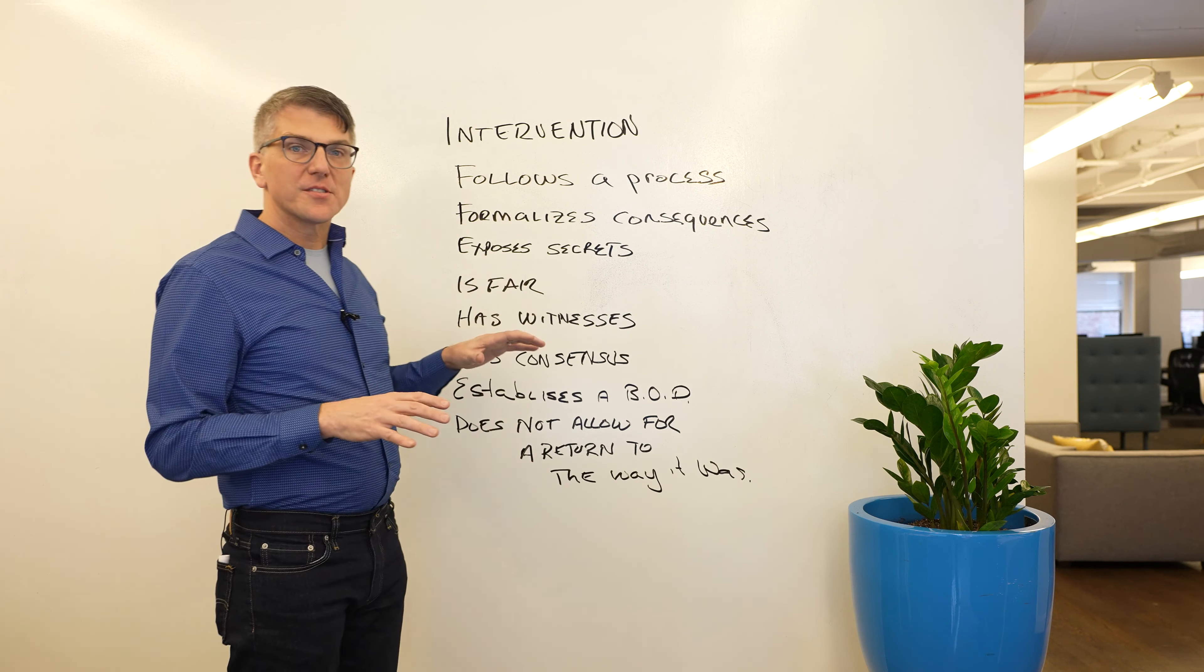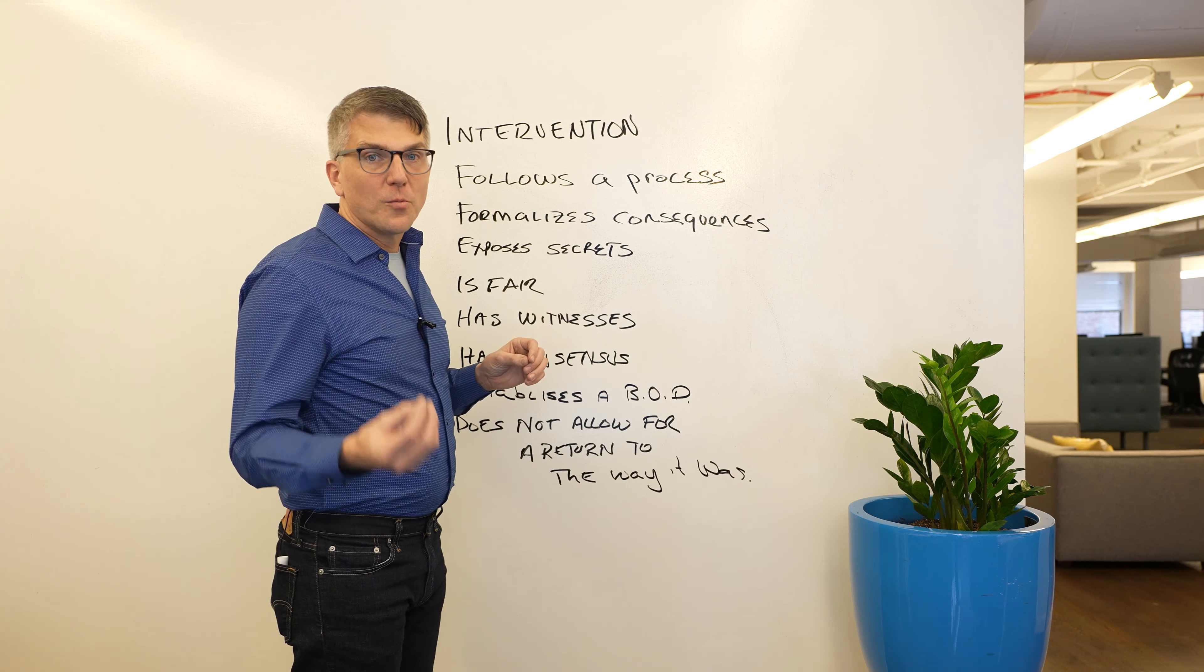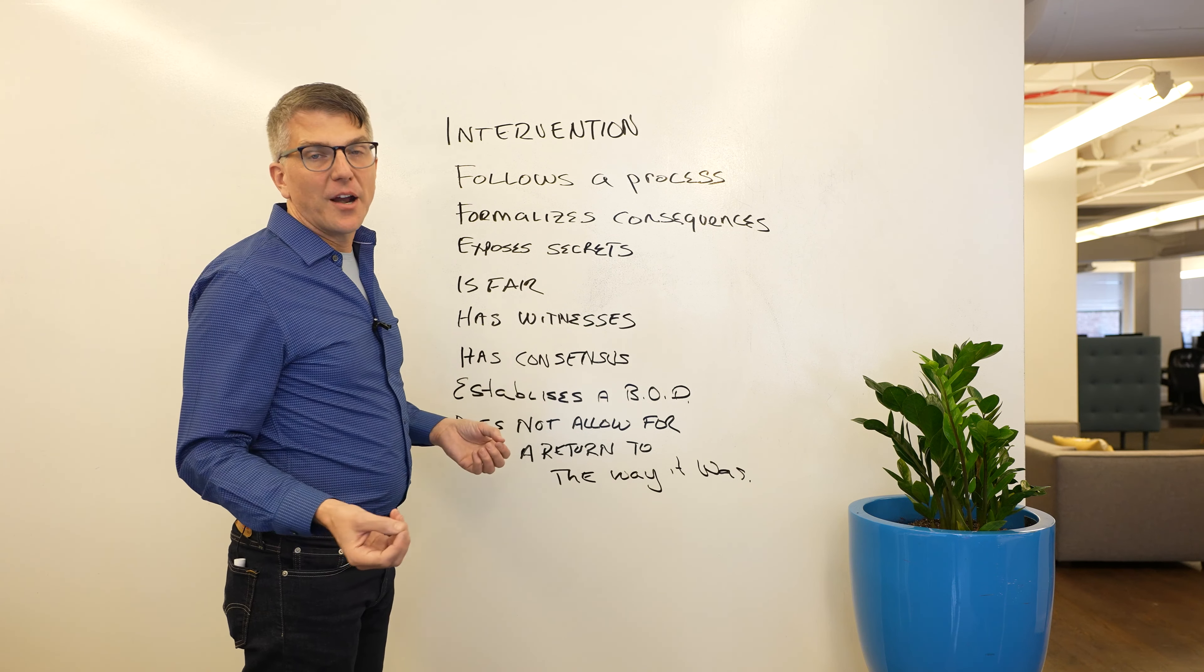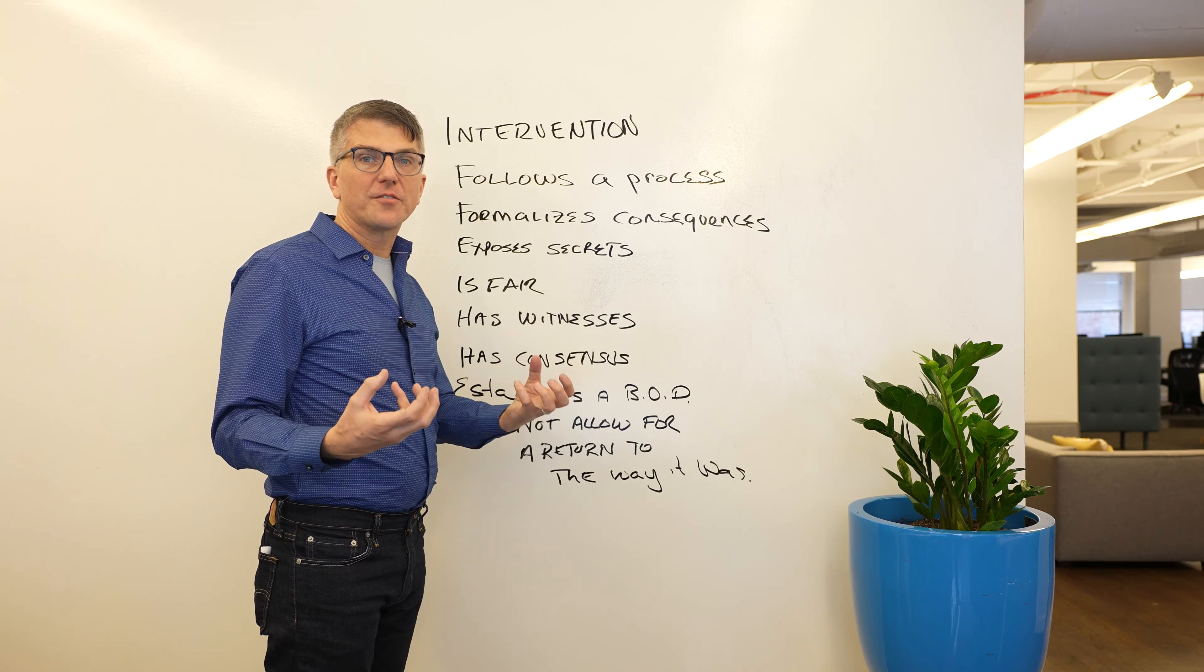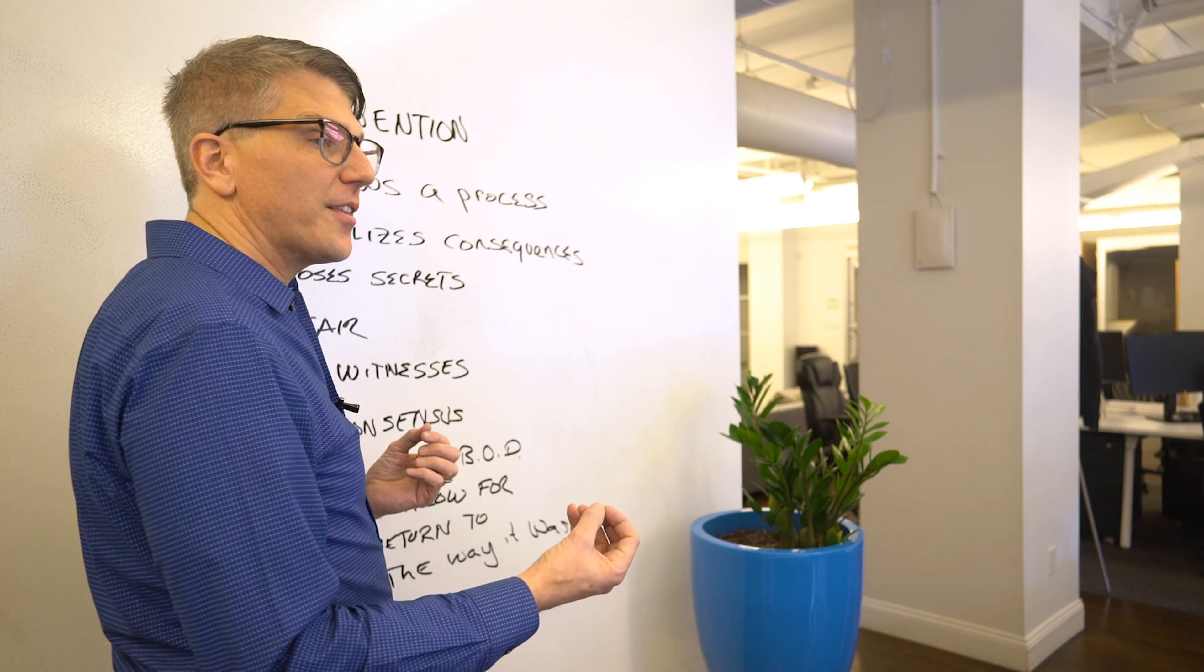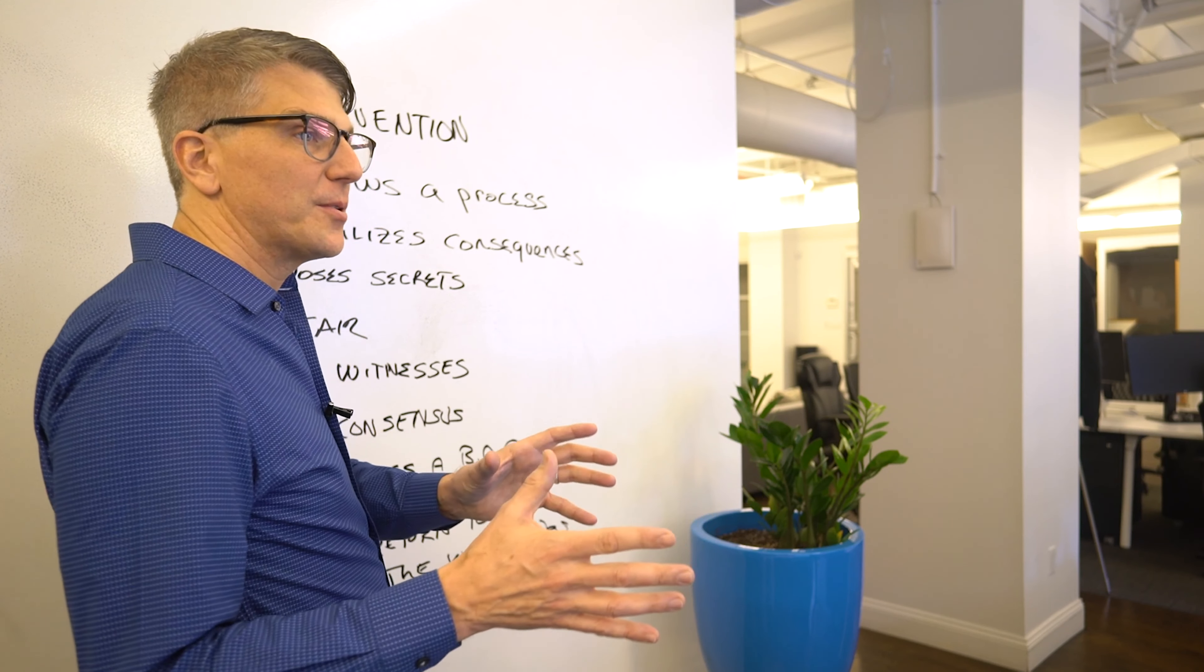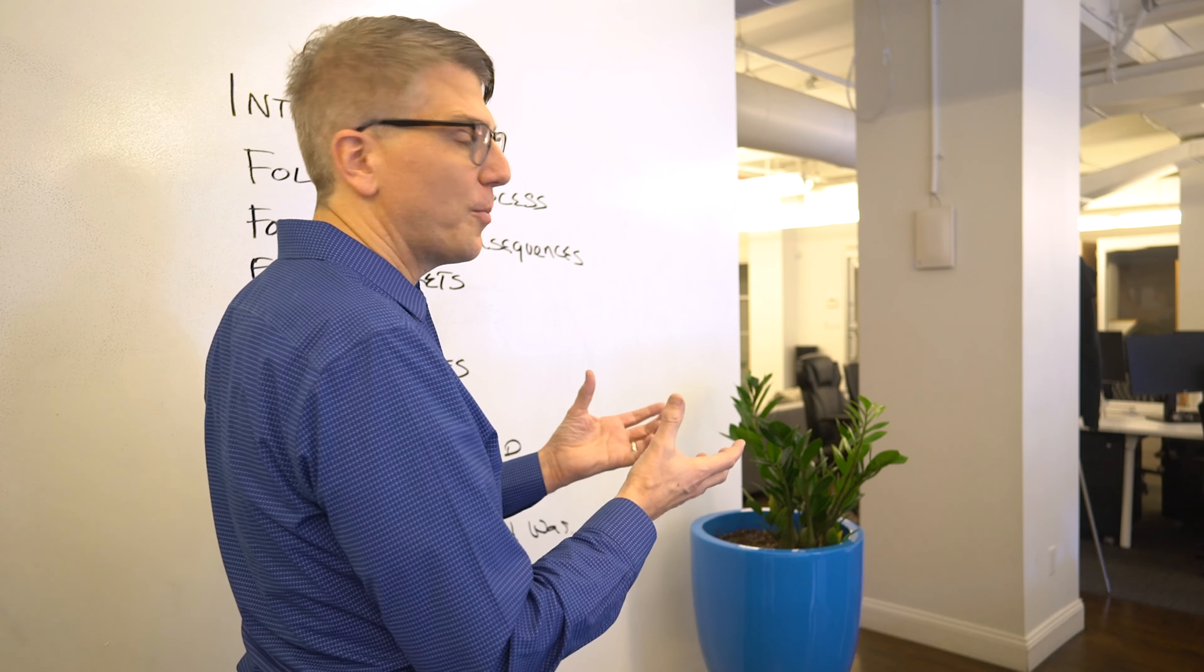Intervention exposes secrets. Secrets is where addiction thrived. A friend knew a story, a girlfriend knew a story, the parents heard a different story. All these different people have heard different stories. The person with addiction is very good at that too - they're good at triangulating people off and telling different people different stories. In an intervention, we bring everybody together and we blow apart the secrets.